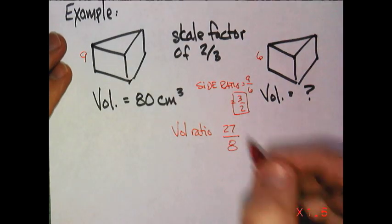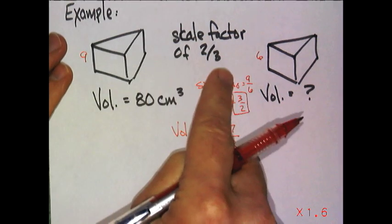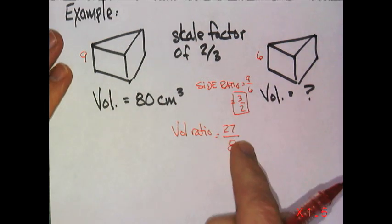eight. So, now I know my volume ratio is 27 to 8. And it makes sense that if I multiply by two-thirds, I'm going small. So, that's big to small. Yes, big to small.